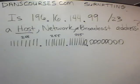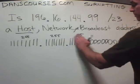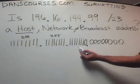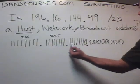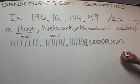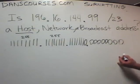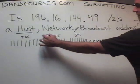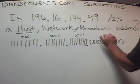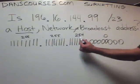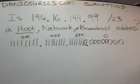What I did was I wrote out slash 23 in binary. Eight bits, eight bits — eight ones, eight ones, seven ones. 16 ones plus seven ones makes 23 ones, and then nine zeros. Slash 23. That means it's a 255.255.254.0 subnet mask.